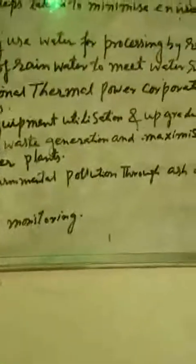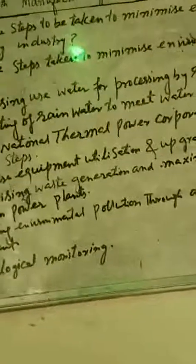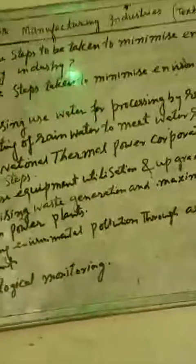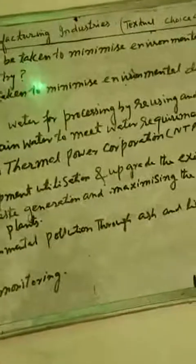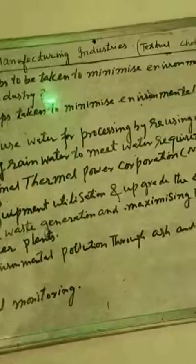The fourth step is ecological monitoring. That means there should be some agencies which should monitor the pollution caused by industries and suggest measures in order to minimize the environmental degradation caused by the industries. Thank you very much.